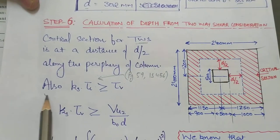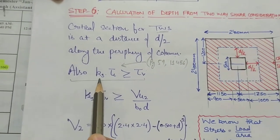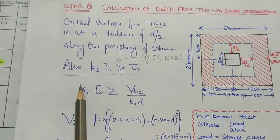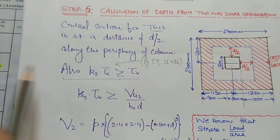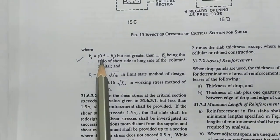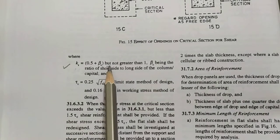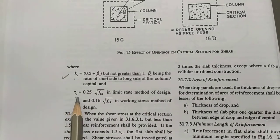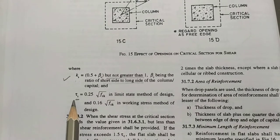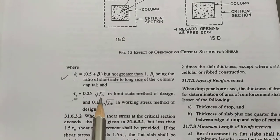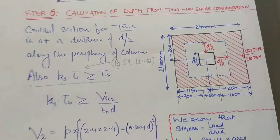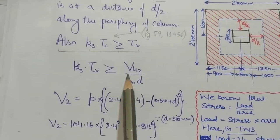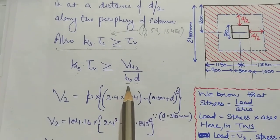The condition for two-way shear is Ks × τC ≥ τV. Ks is determined from IS 456 page 59. Ks = 0.5 + βC but not greater than 1, where βC is the ratio of short side to long side of the column. For two-way shear in limit state method, τC = 0.25 × √FCK. τV = VU2 / (B0 × D), where B0 is the critical perimeter.